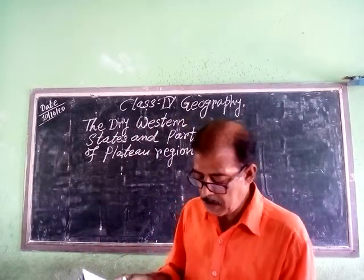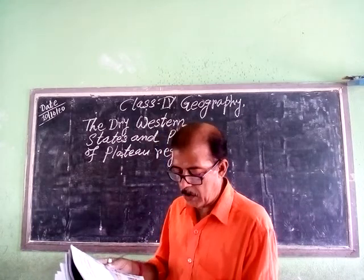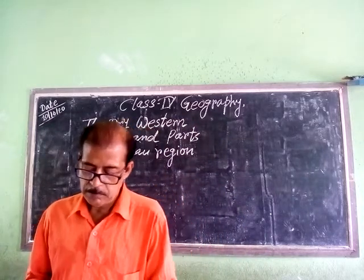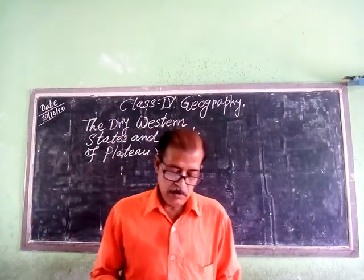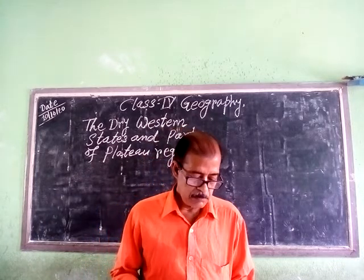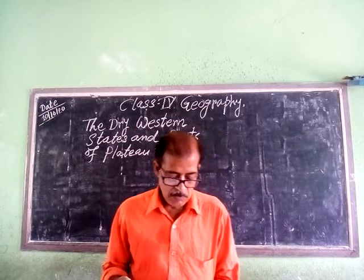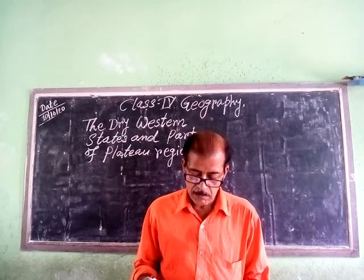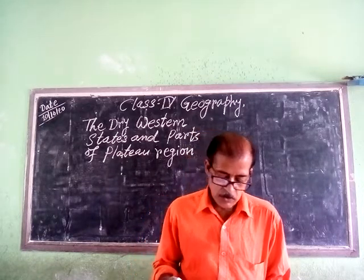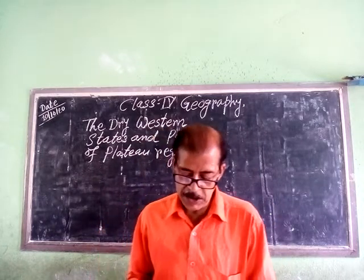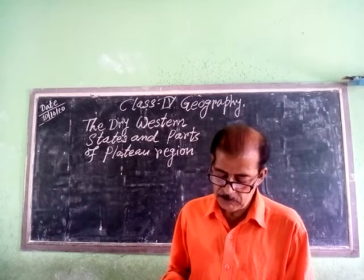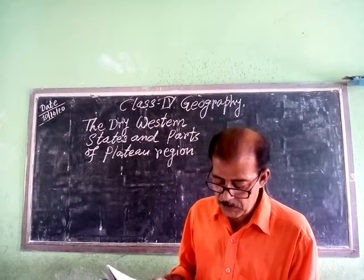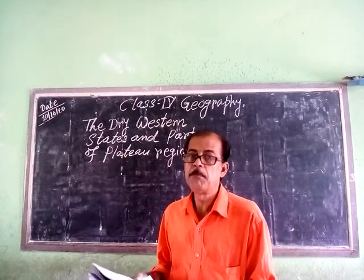The northern and western part of Rajasthan has a long boundary with Pakistan. On the north of Rajasthan lies Punjab and Haryana, whereas Uttar Pradesh lies to the east. On its south lies Gujarat, and to its south-east lies Madhya Pradesh.